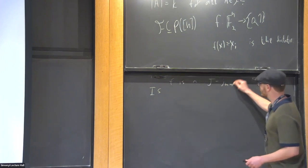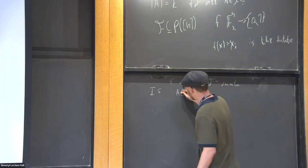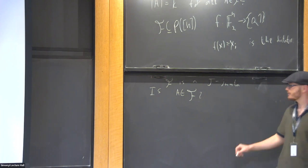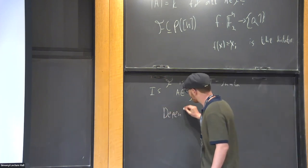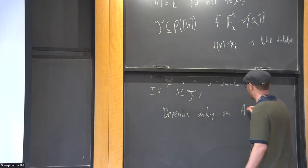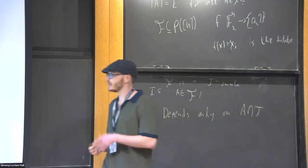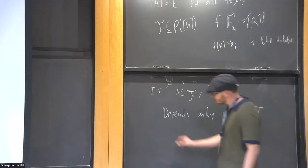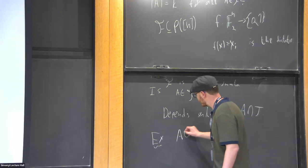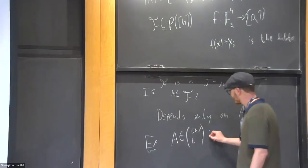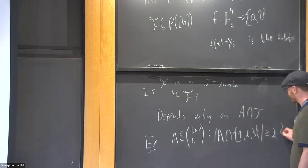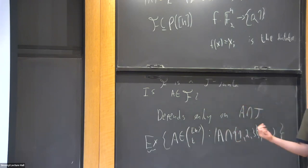If the question is whether A is in F, we can throw away all coordinates outside of J — the answer depends only on the intersection of A with J. We can give an example of an intersecting junta: the family of all sets of size k whose intersection with {1, 2, 3} is at least 2. That's an intersecting junta, and what was shown is that all intersecting families are of this form.